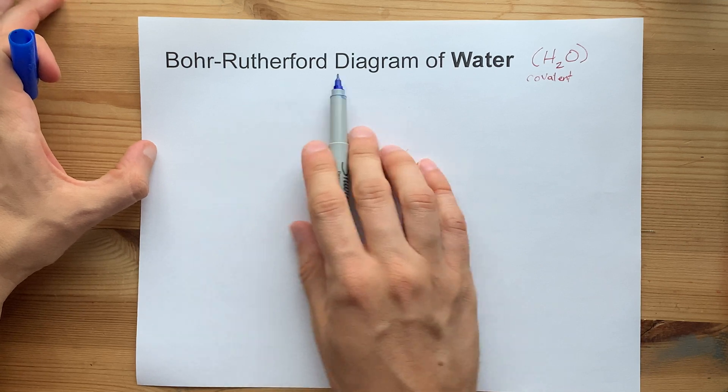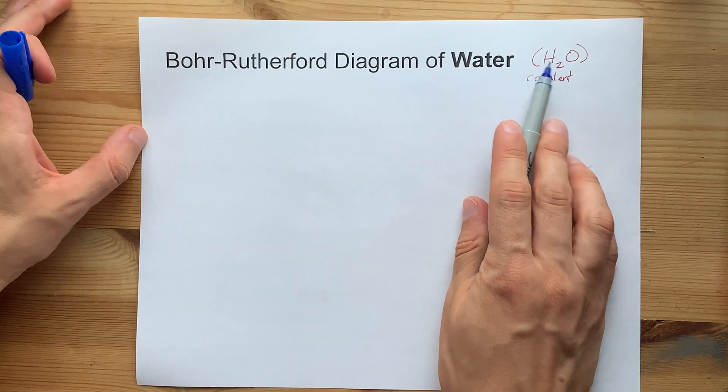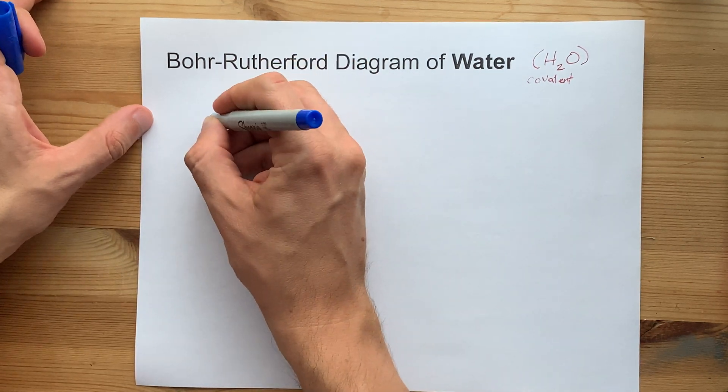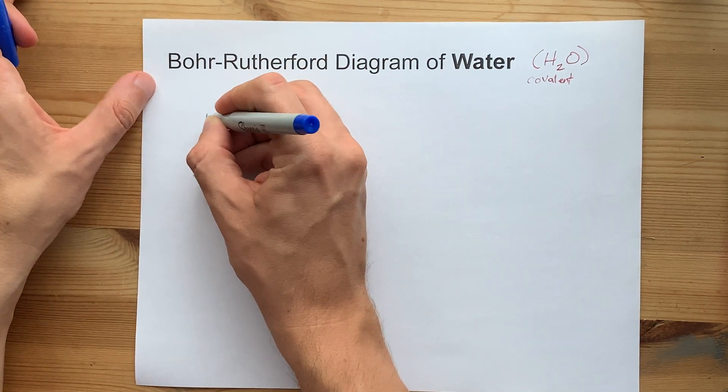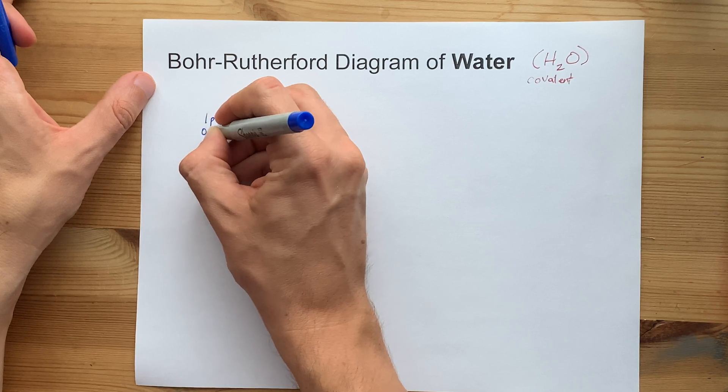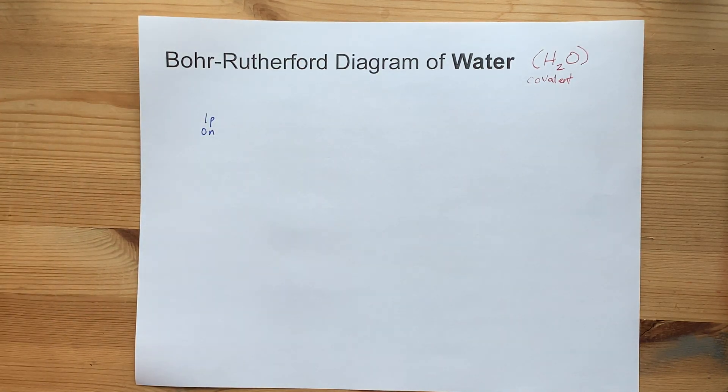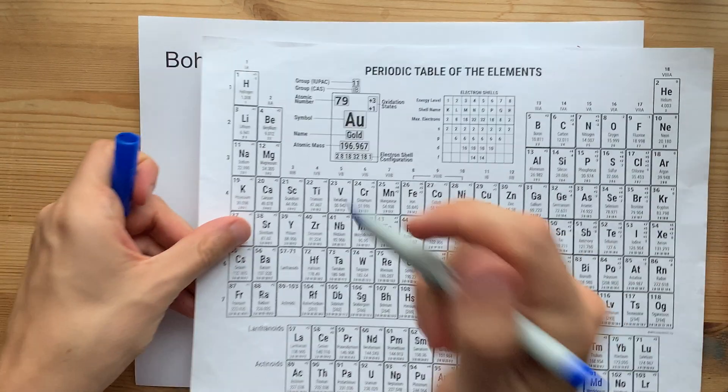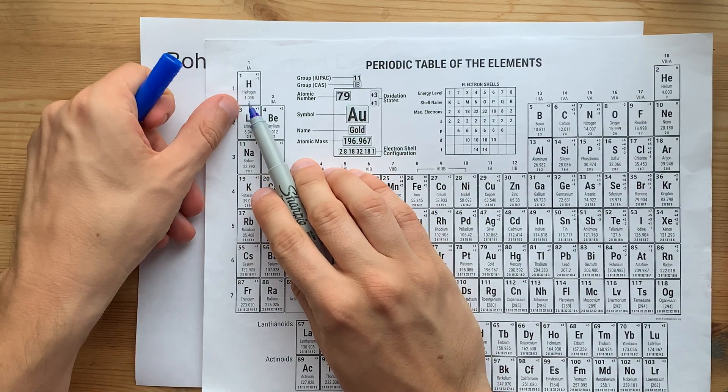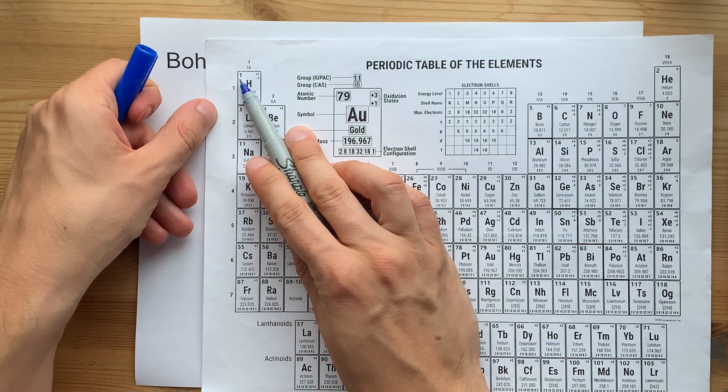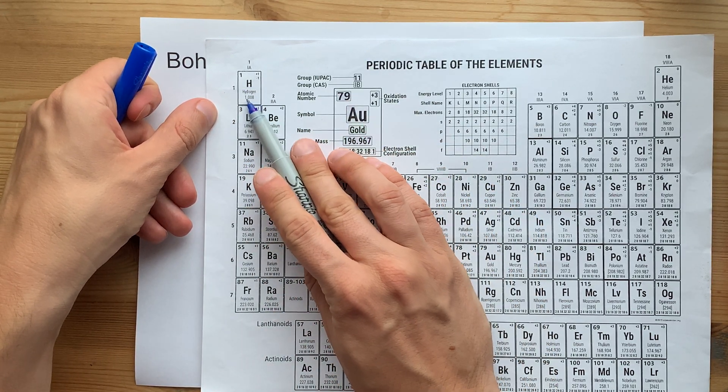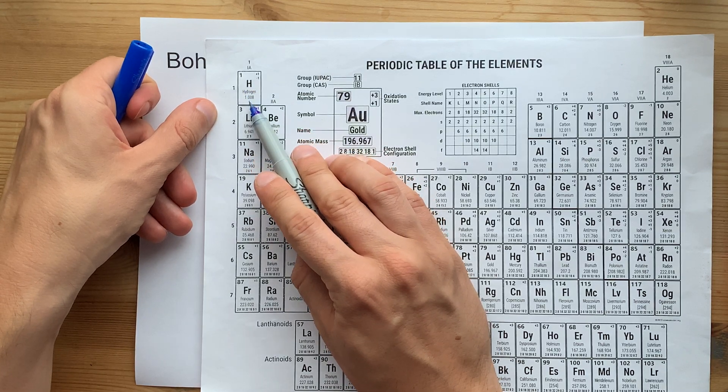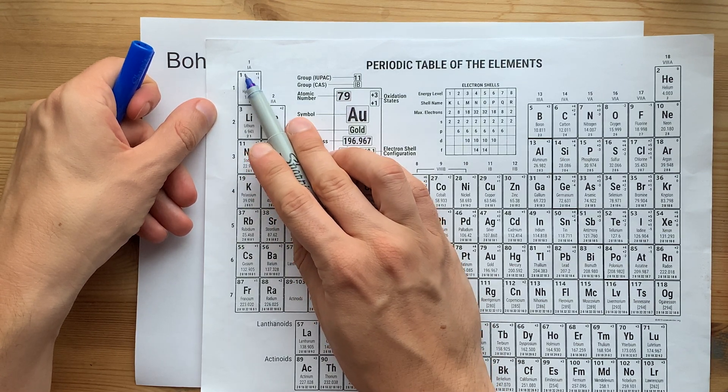Well, you're going to need to draw the Bohr-Rutherford diagram for the two H's and the O. What is it for hydrogen? A hydrogen atom has one proton and no neutrons. If you wonder how I figured that out, I looked at the periodic table, which I've got over here. Hydrogen has an atomic number of one, which means there's one proton, and a total mass of approximately one.